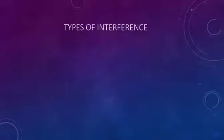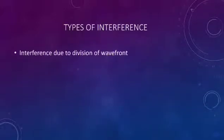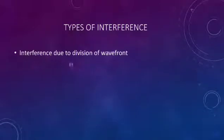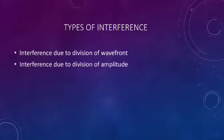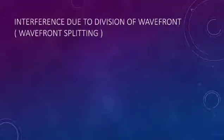There are two types of interference: interference due to division of wavefront, and interference due to division of amplitude. The first one is interference due to division of wavefront.